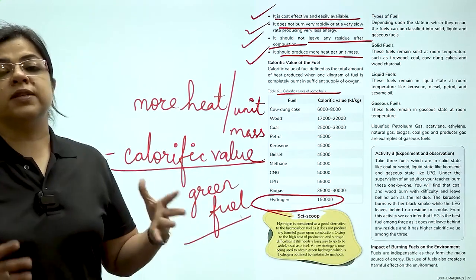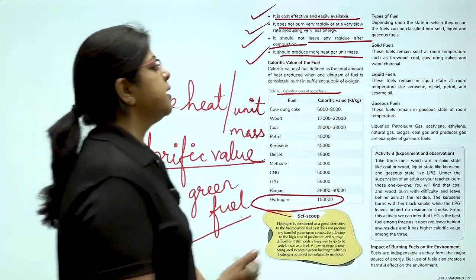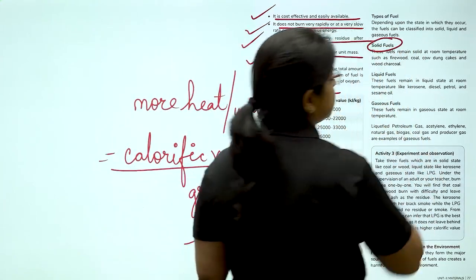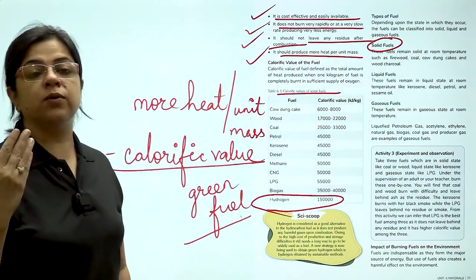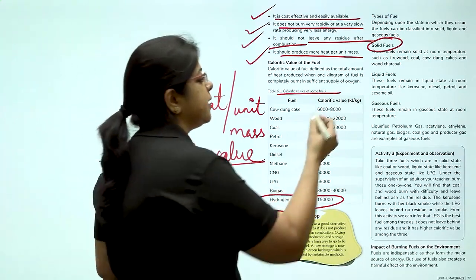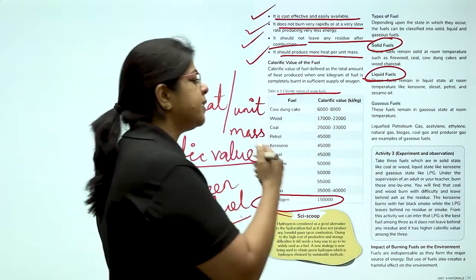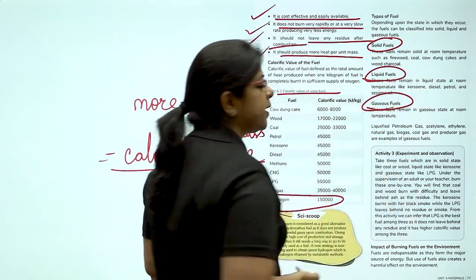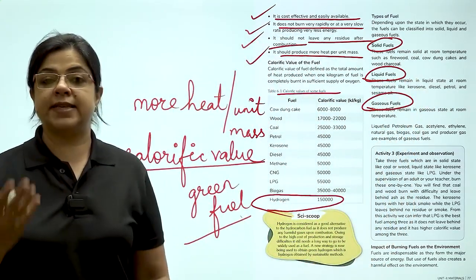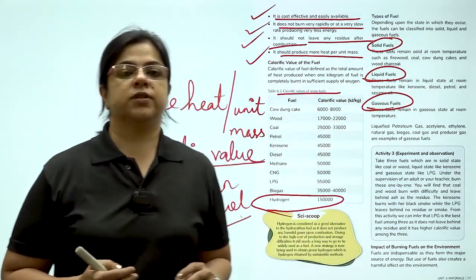So, children, all the fuels that we have studied, they can be in different forms. For example, they can be solid fuels. We talked about coal. We talked about cow dung. What are these? Solid fuels. Then there are liquid fuels. What is petroleum? Liquid fuel. Then there are gaseous fuels. So, what are gaseous fuels? Natural gas, LPG, CNG. These are all gaseous fuels.